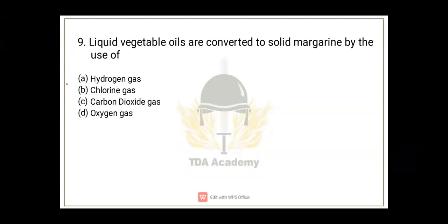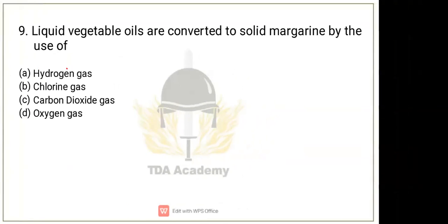Question 9: liquid vegetable oils are converted to solid margarine by the use of hydrogen gas, chlorine gas, carbon dioxide gas, or oxygen gas? You'll remember that vegetable oils are converted through a process called hydrogenation. If the question is a little twisted, you can be confused, but the correct answer is option A, hydrogen gas.